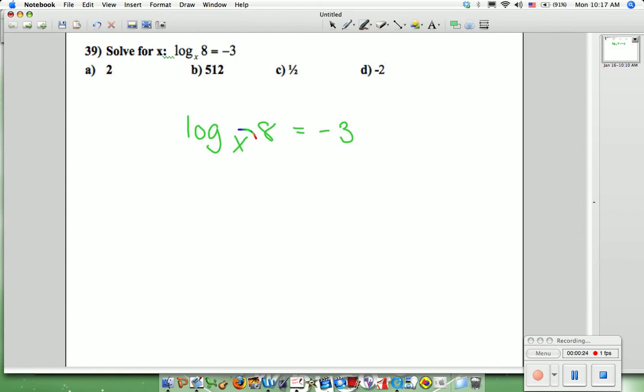So we have to circle the x, swing it to the negative 3, and swing that to the 8. So then we would write it as x to the negative 3rd is equal to 8.